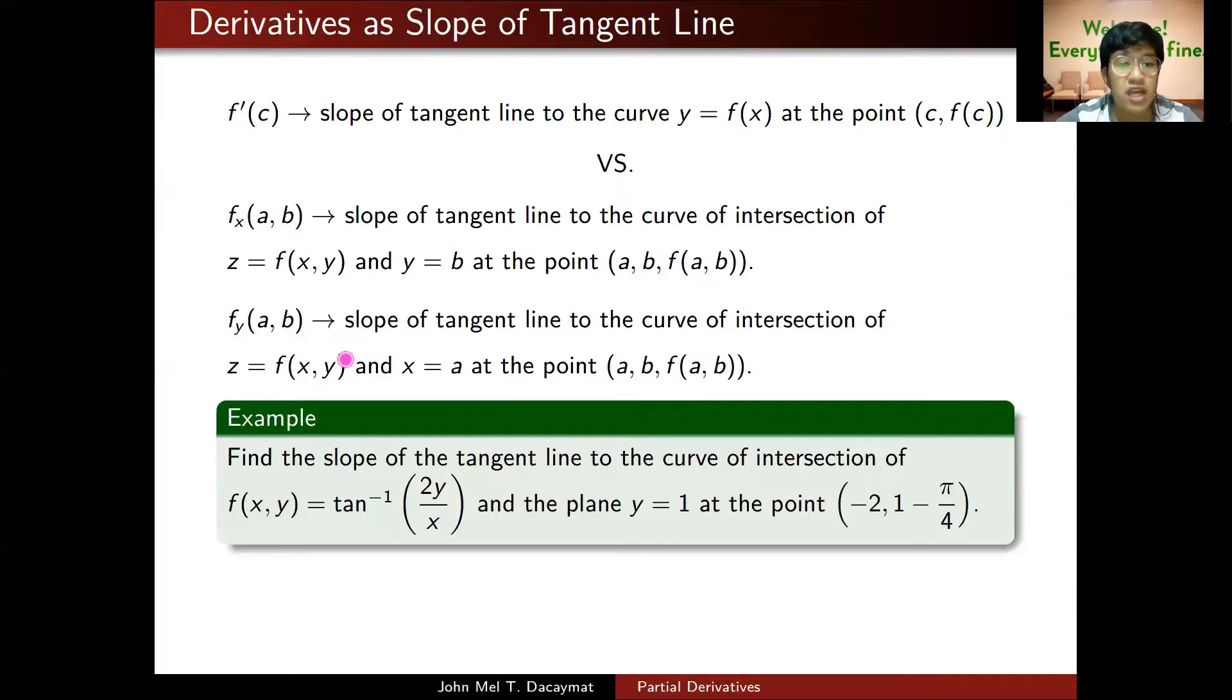For example, given this problem, we find the slope of the tangent line to the curve of intersection of this surface and the plane y equals 1 at this point. This is our (a, b, f(a, b)). If you check, if you plug in x equals negative 2, y equals 1 here, you'll see that f(x, y) will indeed be negative pi over 4.